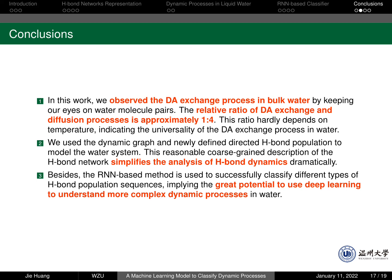We use the dynamic graph and a newly defined directed hydrogen bond population, H-tilde, to model the water system. This reasonable coarse-grained description of the hydrogen bond network simplifies the analysis of hydrogen bond dynamics dramatically. Besides, the RNN-based method is used to successfully classify different types of sequences, implying the great potential to use deep learning to understand more complex dynamic processes in water.